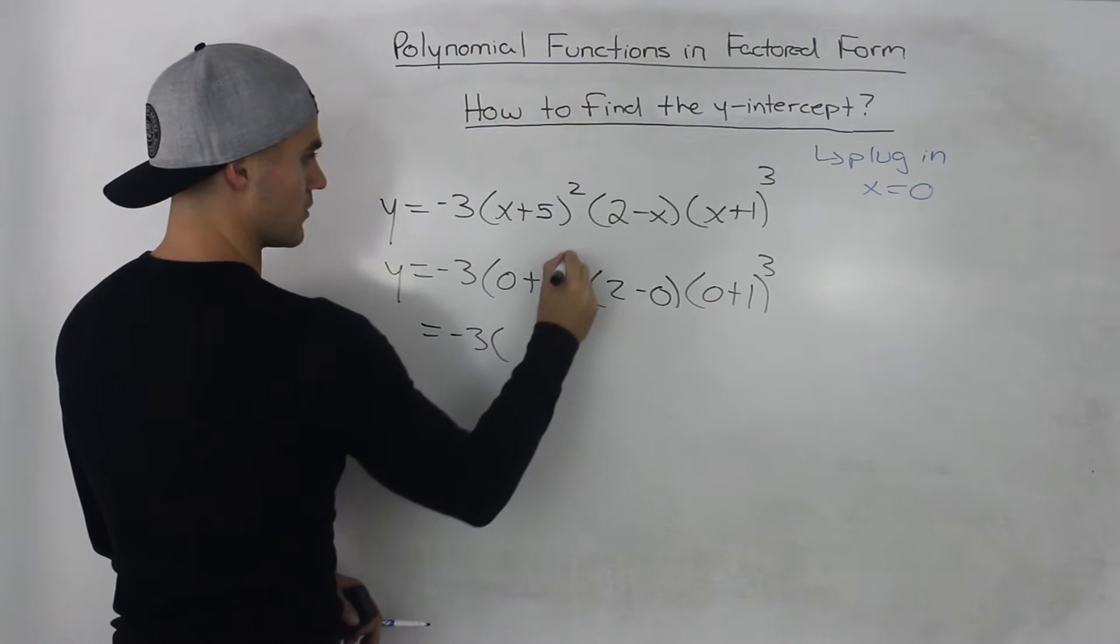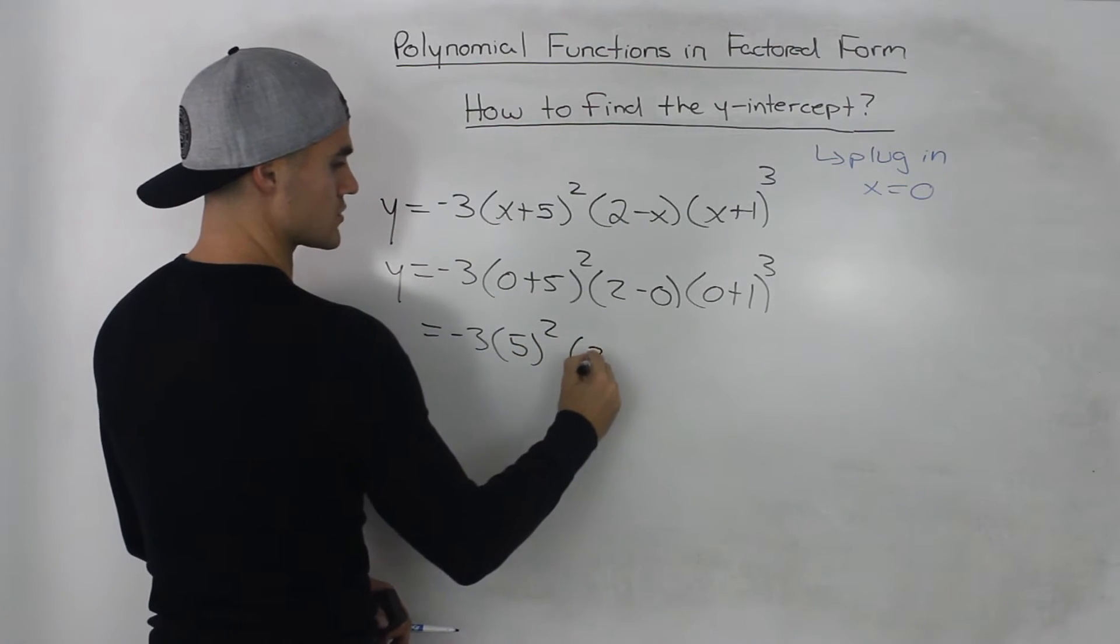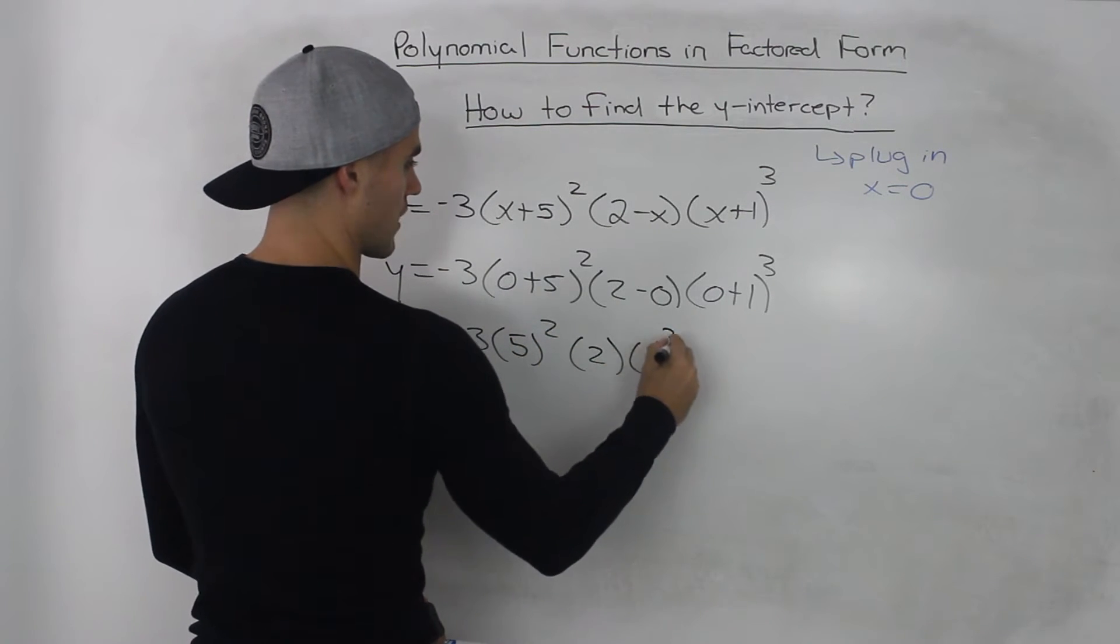Then when we simplify all these brackets, sorry this should be squared there. So when we simplify all these brackets we'll have 5 squared, 2, 1 to the power of 3.